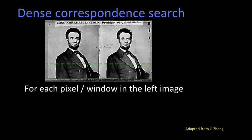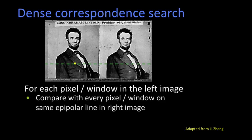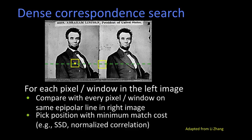Here's how we're going to do the dense correspondence, meaning we're finding a match everywhere. For every pixel in the left image, we're going to take a little window around that pixel. We're going to compare it with every pixel slash window in the right image. And we're going to just pick the position that is either the most similar or the least dissimilar. And that best match, that's what we're going to assume is our corresponding point.